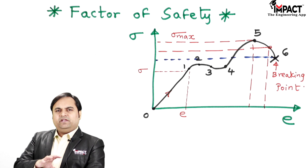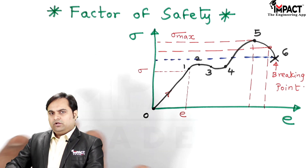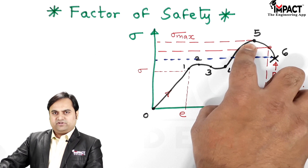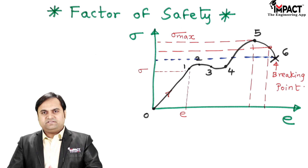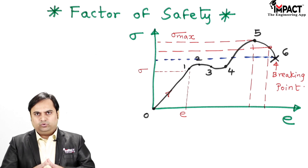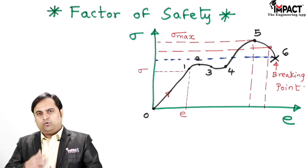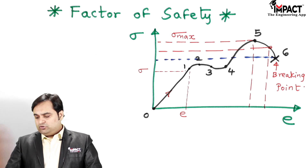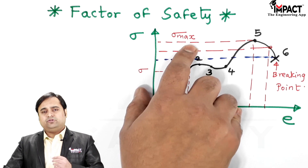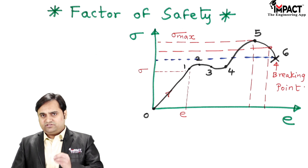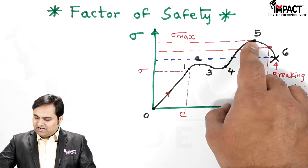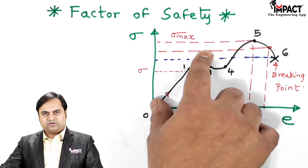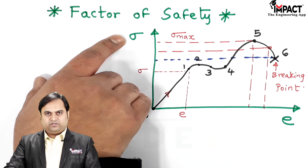Our target should be to avoid the material entering this region. To avoid that, we have to reduce the stress — when a component is being designed and subjected to loading, it should not reach the maximum stress. Maximum stress means maximum load, so the maximum load should not be present in the material's working or service condition. To move the material away from the ultimate stress, we use a factor called the factor of safety.